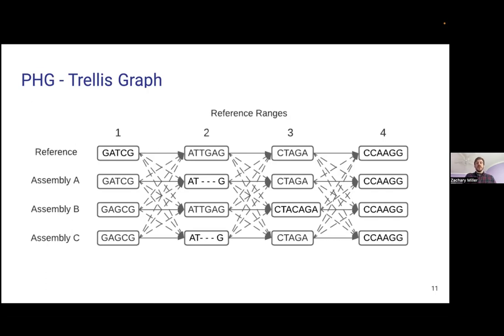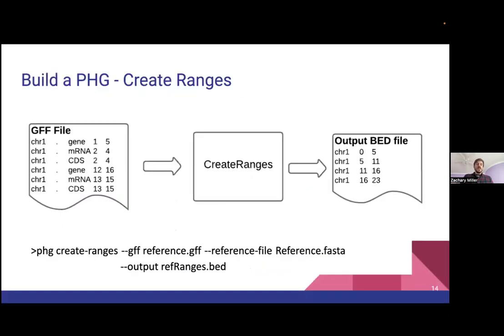This is the somewhat high-level, somewhat simplified workflow we have to do to build the database — that's the first step — and then we can use it to impute WGS short reads. We'll start at the "create ranges" step, where we need some definition of good cut points. The software is designed to take any file in a BED format, so if you have a very good handle on where you want your cut sites to be, you can skip this step and pass in the BED file directly.